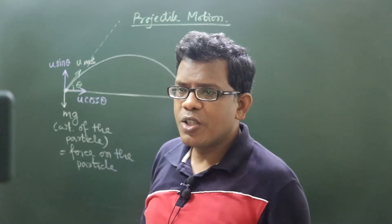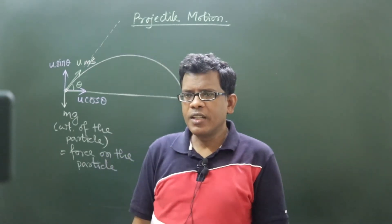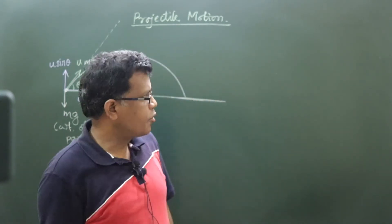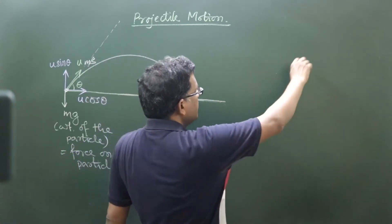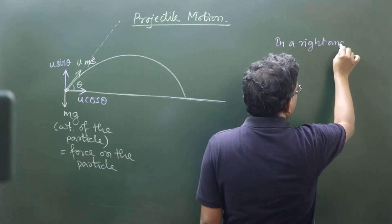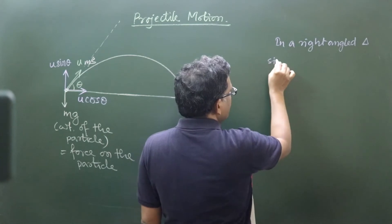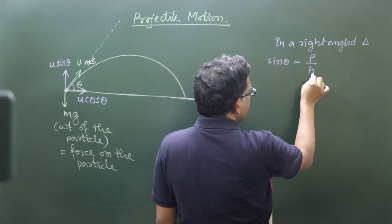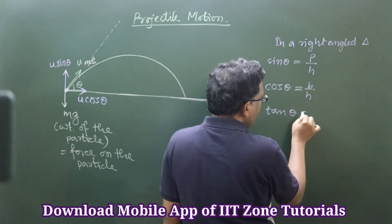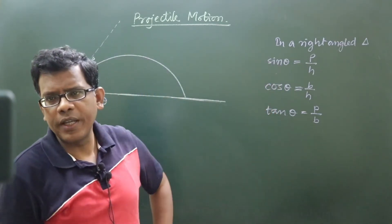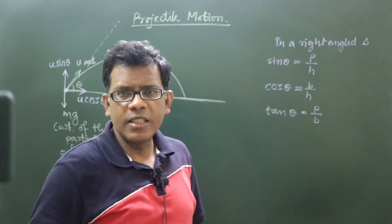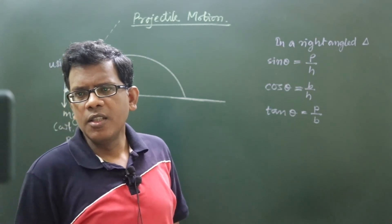If you do have that question in your mind, share it with me. Do you understand why I am writing the horizontal one as u cos theta and the vertical one as u sin theta? No issue, I will explain. Do you know the formulas in a right-angled triangle? In a right-angled triangle: sin theta = P/H, cos theta = B/H, and tan theta = P/B. Do you know these three mathematical relations?